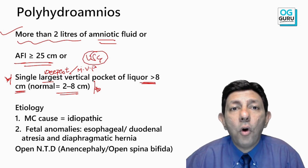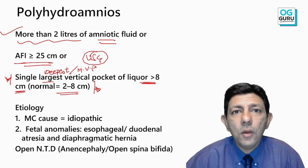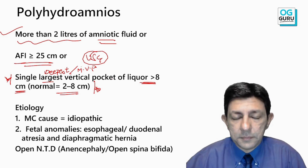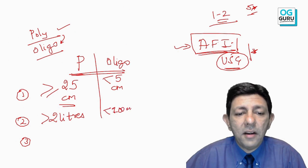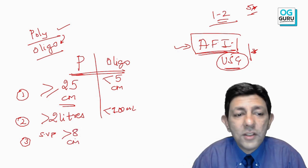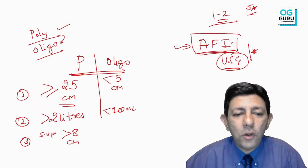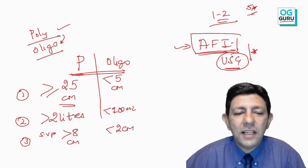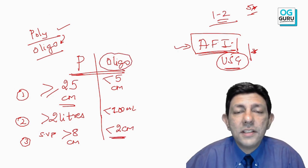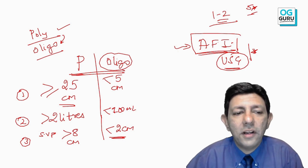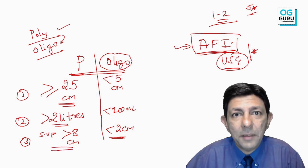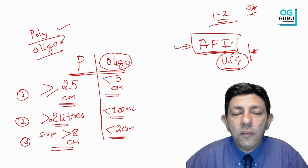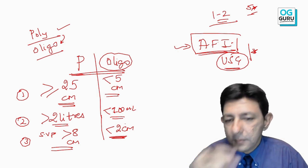For oligohydramnios, there are also three definitions: AFI less than 5 cm; overall fluid less than 100 ml; or single vertical pocket less than 2 cm. Since the normal single vertical pocket range is 2 to 8 cm, less than 2 cm indicates oligohydramnios. So — poly: AFI ≥25 cm, liquor >2 liters, or SVP >8 cm. Oligo: AFI <5 cm, fluid <100 ml, or SVP <2 cm.